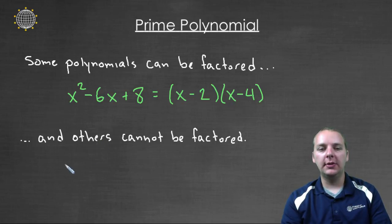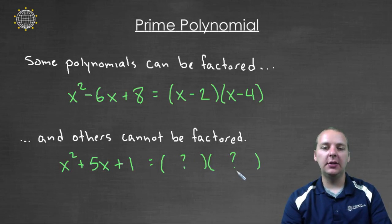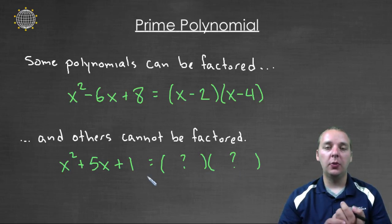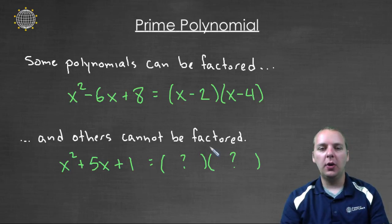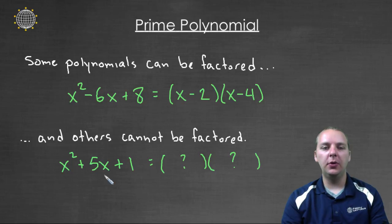But then you have other polynomials like x squared plus five x plus one. Well, there's no way to factor this. Because when you think about it, if you just try to do trial and error, the last two numbers would have to multiply to one. But the only way to multiply to one would be one times one, and that can't add to five. And so what do we call this if you have a polynomial here that can't be factored into a product of two linear polynomials?